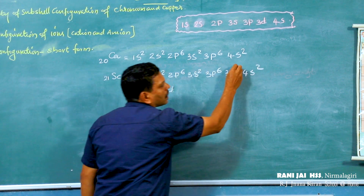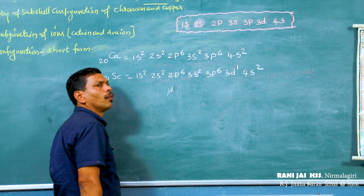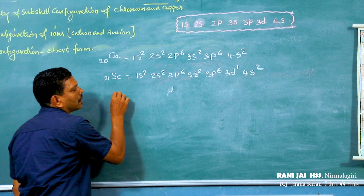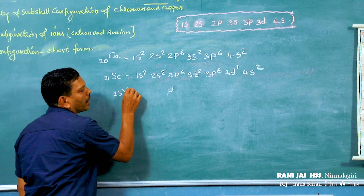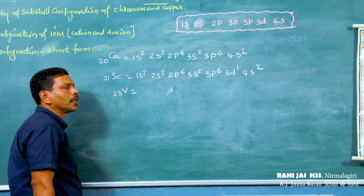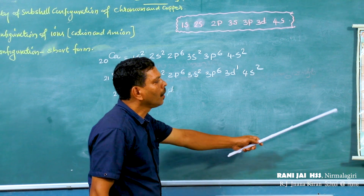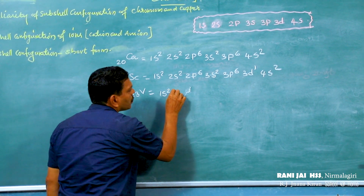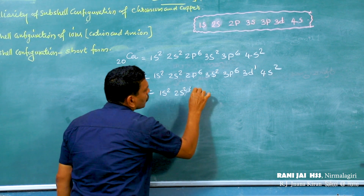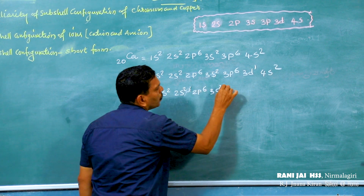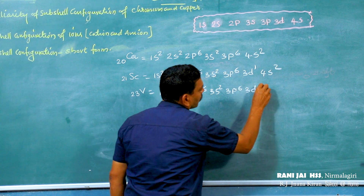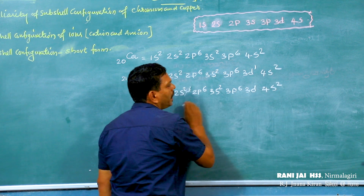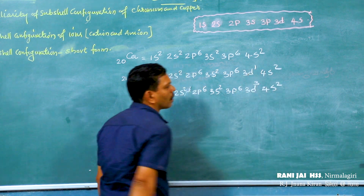For atomic number 21 (scandium), the configuration continues: after the first 20 electrons we add one more — 3d1. Then for atomic number 23 (vanadium), look at the periodic table: 1s2, 2s2, 2p6, 3s2, 3p6, 3d1, 4s2 — total 20 electrons accounted for, then 3 more electrons remain, giving 3d3.